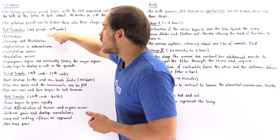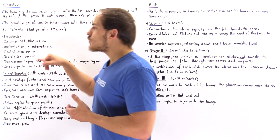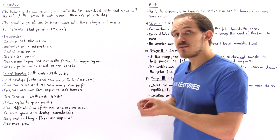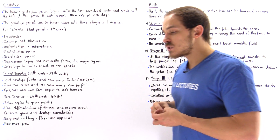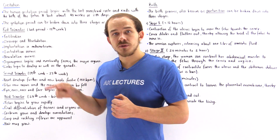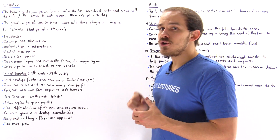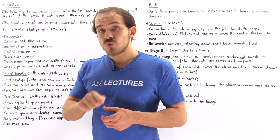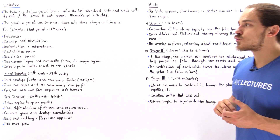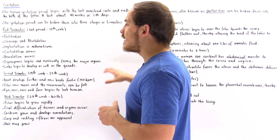Within the first several weeks following fertilization, we also have neurulation take place. Neurulation is when we form the notochord, which eventually gives rise to the neural folds and the neural plate. The neural plate then forms the neural tube and the neural crests. The neural crests give rise to the peripheral nervous system, while the neural tube gives rise to the central nervous system — the brain and spinal cord.